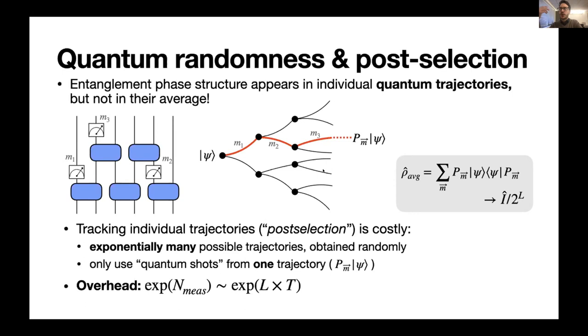And while each one of them, or at least almost all of them display this phase structure, their stochastic average, so if you simply add them up stochastically, you get a density matrix that doesn't show any of this. That simply corresponds to dissipative dynamics and at late times approaches infinite temperature. So it won't know about the phase transition. It won't know about all of these universal features.